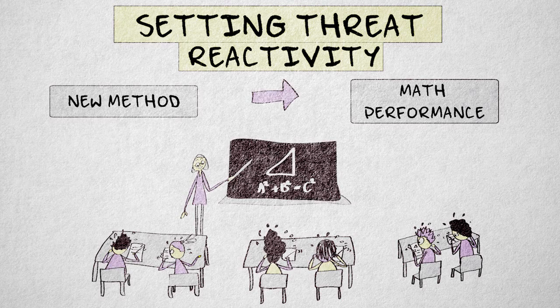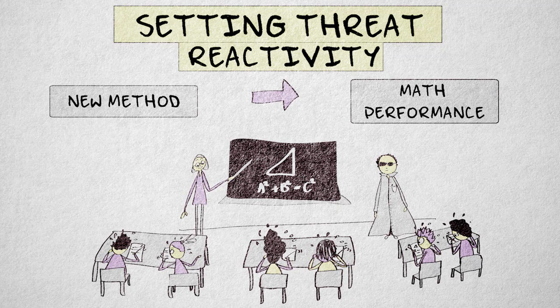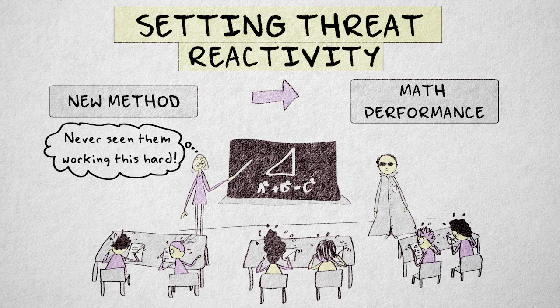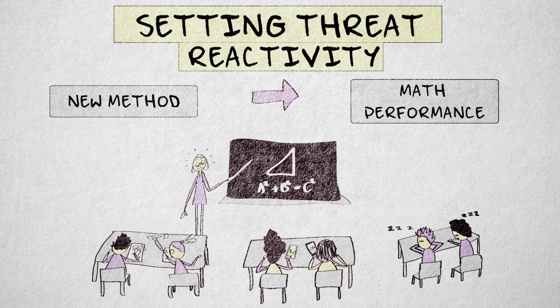Say we investigate a new method for teaching high school math. The researcher is present during the lessons and measures math performance in class. What if students work harder because they know they're being studied, and this makes the new method more effective? In a natural setting, without the researcher present, students might put less effort into their schoolwork, reducing the effectiveness of the new method.